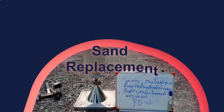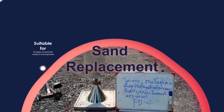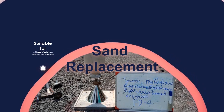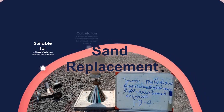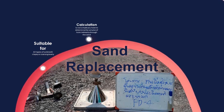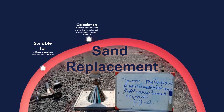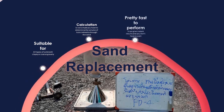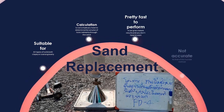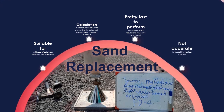The sand replacement method, on the other hand, can be used on a wide range of soil types — it can be used for gravelly fill as well as clay soil. However, the calculation is not simple, as you have to determine the volume of the hole indirectly. Even so, it can give instant results and you don't have to wait. However, this method is not as accurate as the nuclear density test method.